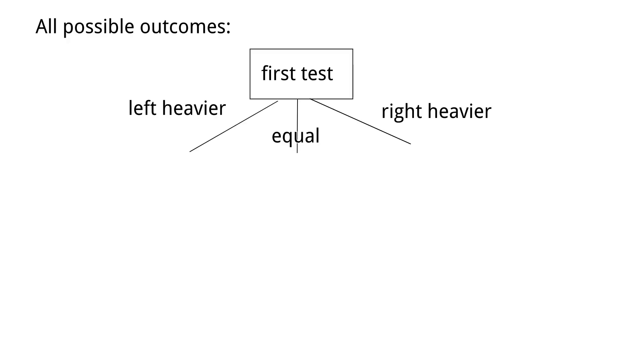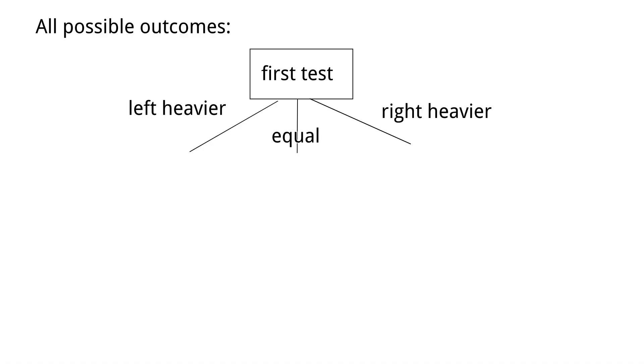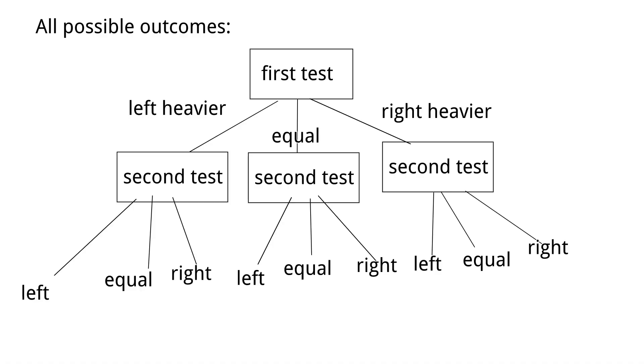For the 9-ball problem, we have 9 possible answers. For outcomes: the first use of the scale gives 3 possible results, and so does the second. So 3 times 3 equals 9 possible outcomes. We have 9 outcomes and 9 answers — that works because you can match them perfectly.